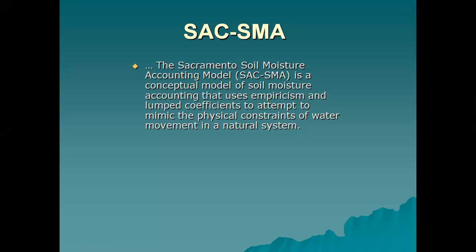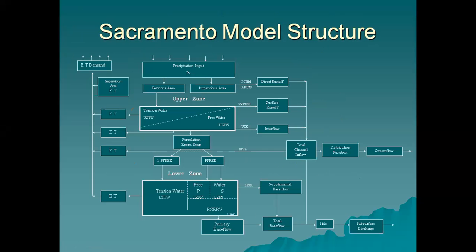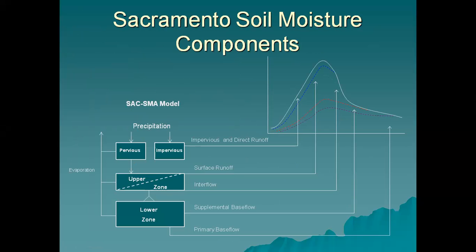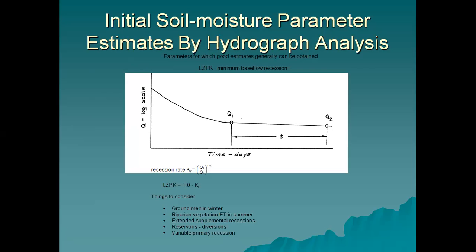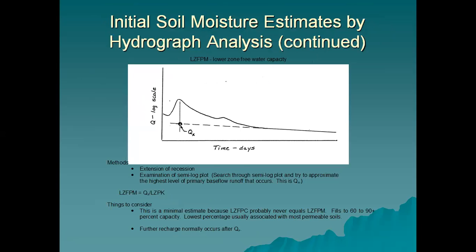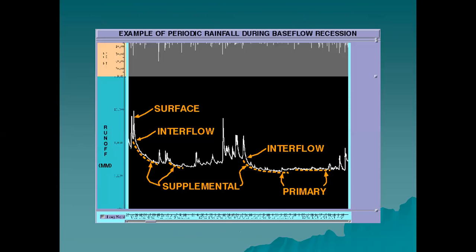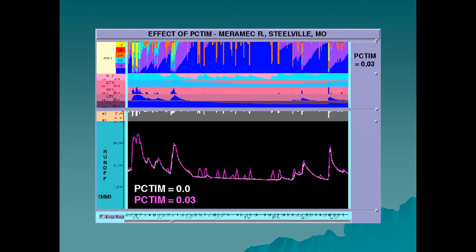The Sacramento Soil Moisture Accounting Model is a conceptual model of soil moisture accounting that uses semi-empirical and lumped coefficients to mimic the physical constraints of water movement in a natural system. It includes components such as the model structure, hydrograph decomposition, soil moisture components, initial soil moisture parameter estimates by hydrograph analysis, and multi-layer soil scale output.